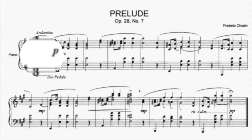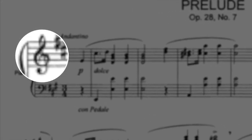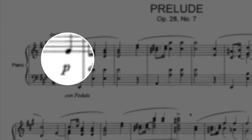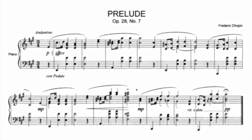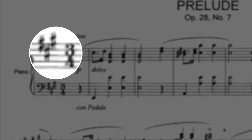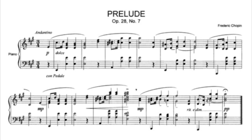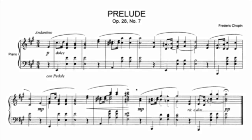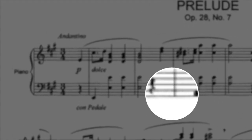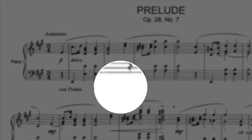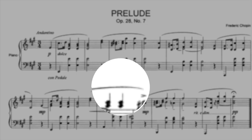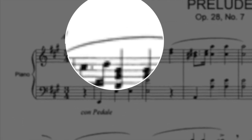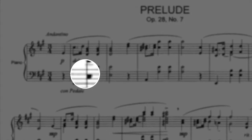Fast forward a few centuries and notation has developed into a much more sophisticated system. A piece of sheet music will tell you the range of notes, the time signature, the key signature, the specific rhythms, the rests being played, the pitches, the articulations, and the dynamics.